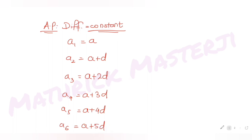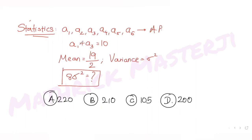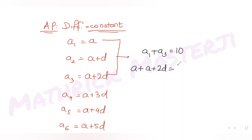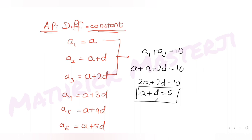The question tells us the sum of the first and third term is 10. So: a plus (a+2d) = 10, which gives 2a+2d = 10. Dividing by 2, we get a+d = 5. I'll mark this as equation 1.